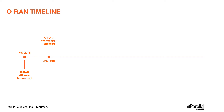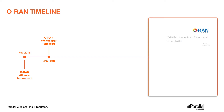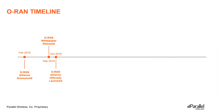In around September-October 2018, the first ORAN White Paper 'Towards an Open and Smart RAN' was published. This laid out ORAN Alliance's vision that brought a lot of newer organizations to ORAN Alliance to drive the truly open and smart RAN vision. The ORAN Alliance was officially launched at this point in October of 2018.